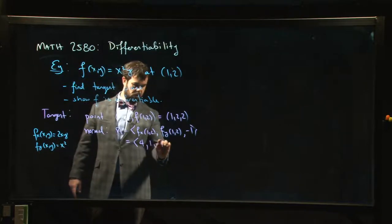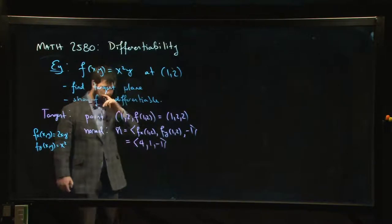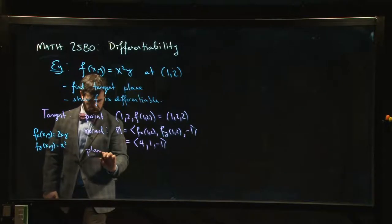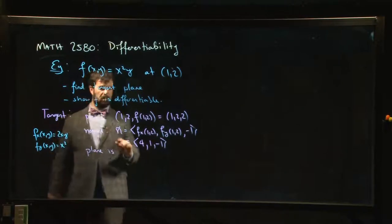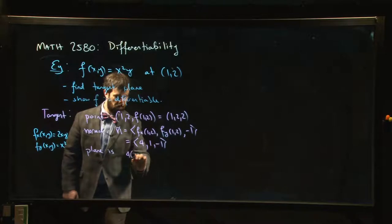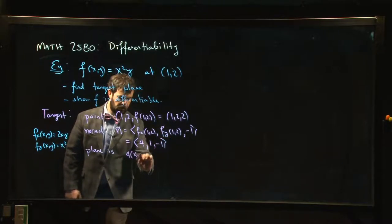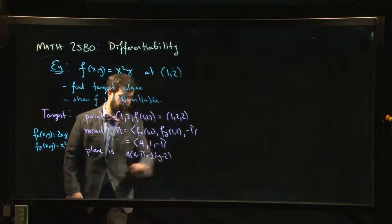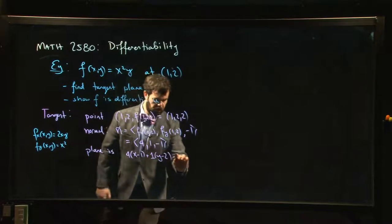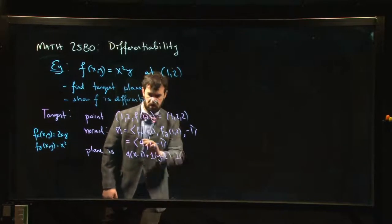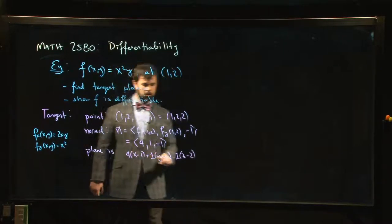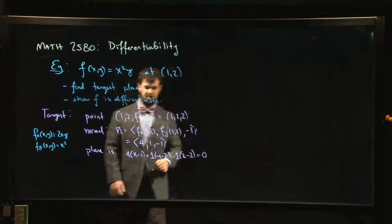For the y derivative I just get 1 squared, so I have (4, 1, -1). Okay, so that means that my plane is given by 4 times (x minus the x coordinate of our point) plus 1 times (y minus the y coordinate), so y minus 2, minus 1 times (z minus the z coordinate), so z minus 2, and that should be 0.